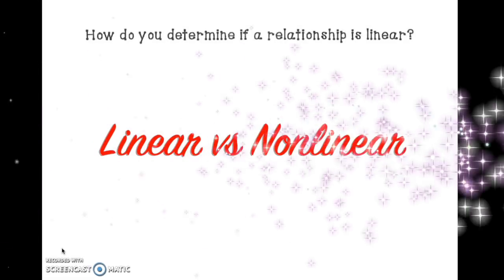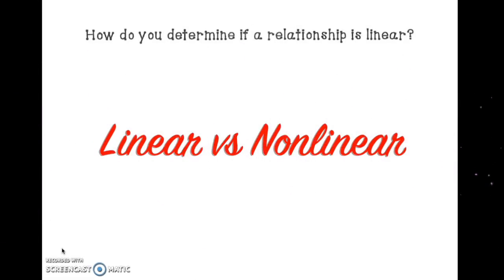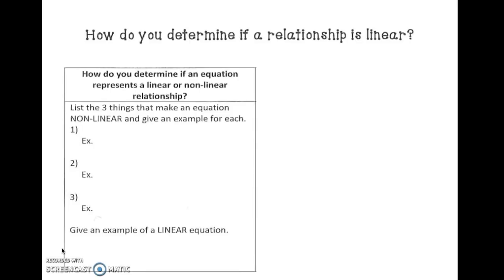Today we're going to take a look at how you determine if a relationship is linear. Here are the three things that make an equation non-linear. Number 1: exponents other than 1 attached to the variable. For example, y is equal to x squared.